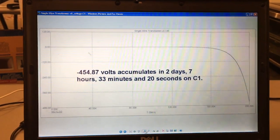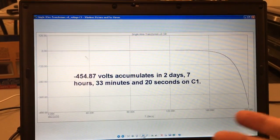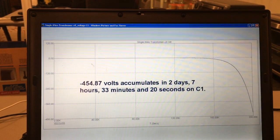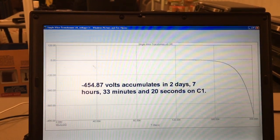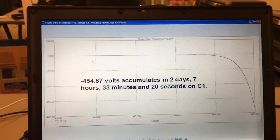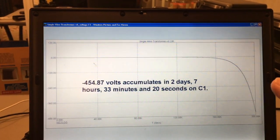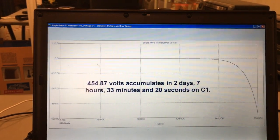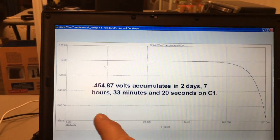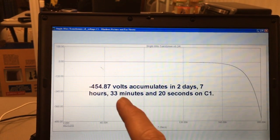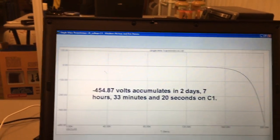Now this is the output. See, it goes in the negative. It could just have easily as gone in the positive if I had reverse polarity of the thing when I charged one sphere. But I'm measuring the voltage across the shell of the opposite sphere. And I'm measuring negative 454.87 volts, accumulating in two days, seven hours, 33 minutes, and 20 seconds. Ain't that cool?